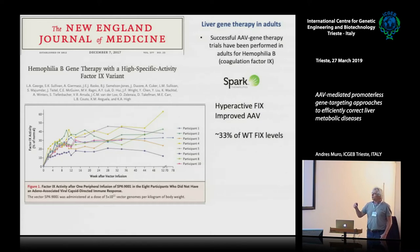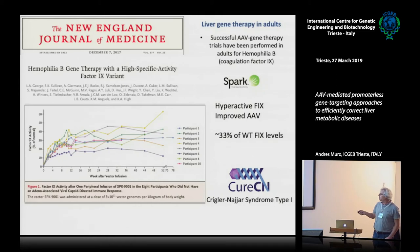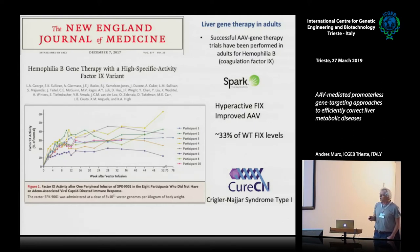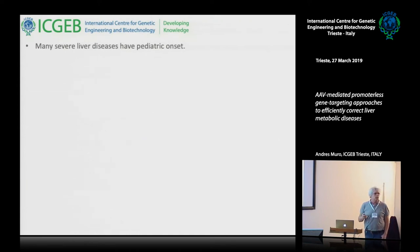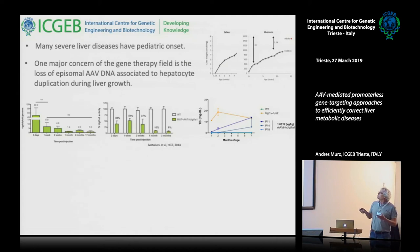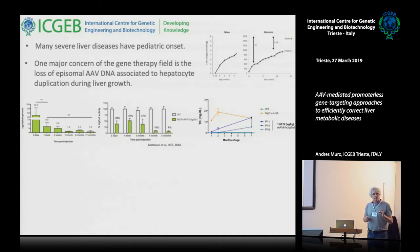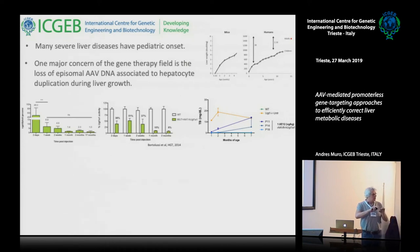We are also doing this approach in the Cure CN Consortium — Cure Crigler-Najjar — which you will hear about tomorrow. However, we are treating adult patients in most cases, while many liver diseases have a pediatric concept. The AAV vector is based on episomal DNA that does not integrate into the chromosome, so when the cell divides, the chromosomal DNA goes to daughter cells but the viral DNA is not duplicated and is gradually lost.